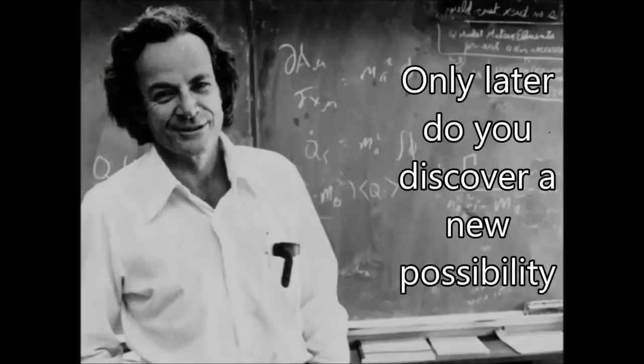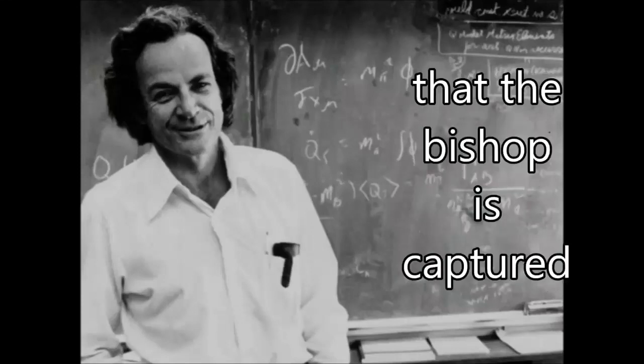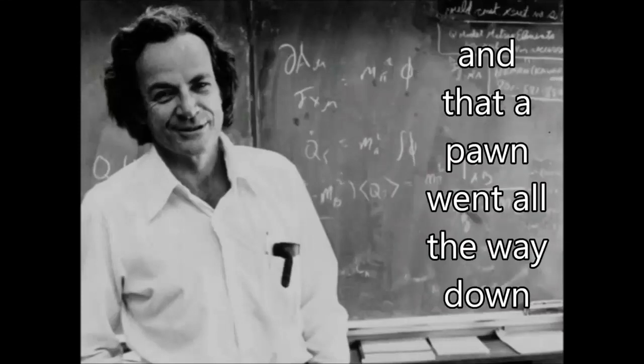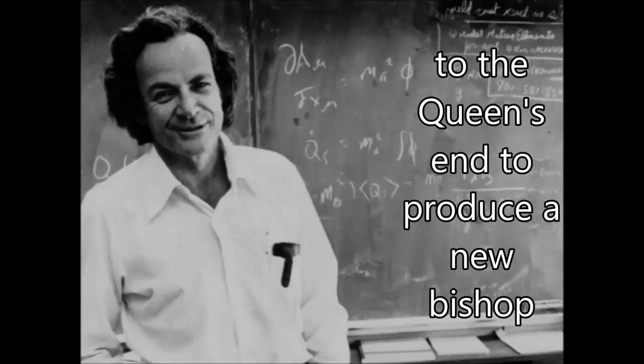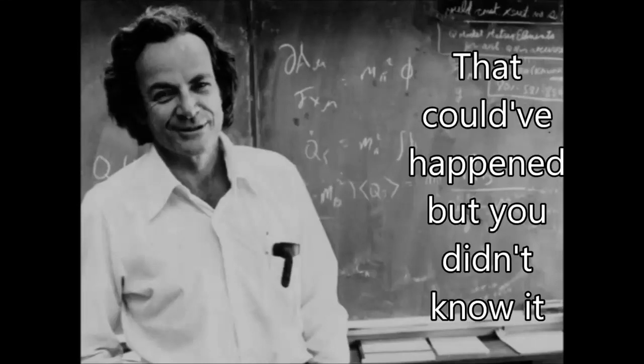Only later do you discover the new possibility, that the bishop is captured, and that a pawn went all the way down to the queen's end to produce a new bishop. That can happen, but you didn't know it.